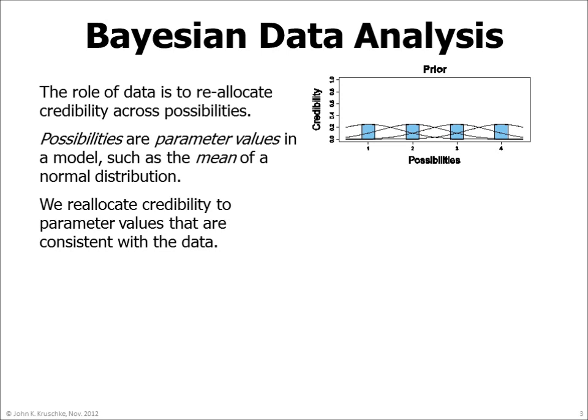For purposes of illustration, suppose we entertain four candidate values for the mean of the distribution, namely values of 1, 2, 3, and 4. This graph plots the prior credibilities of the four means as heights of the four blue bars.